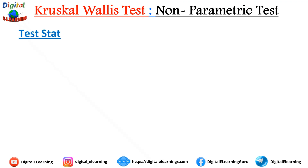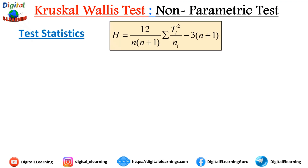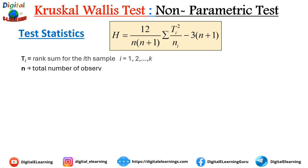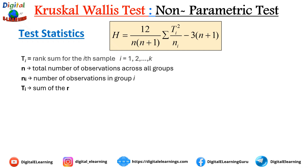The test statistic formula is: H = (12 / (n(n+1))) × Σ(Tᵢ² / nᵢ) − 3(n+1), where Tᵢ is the rank sum of the i-th sample, n is the total number of observations across all groups, nᵢ is the number of observations in group i, and k is the number of groups.